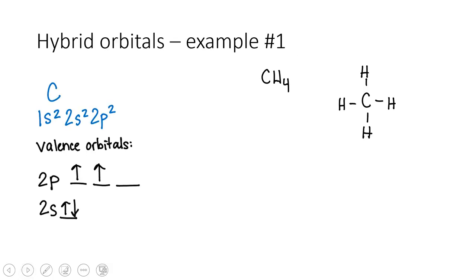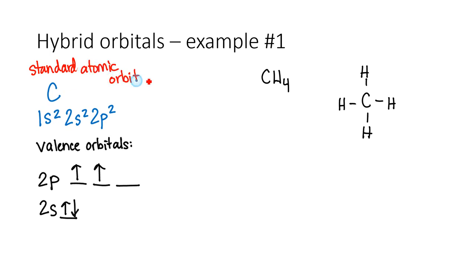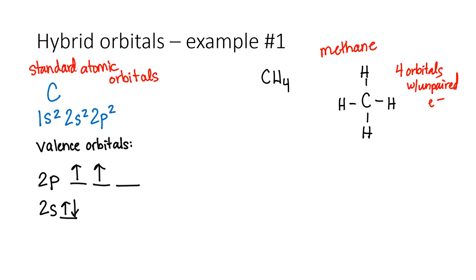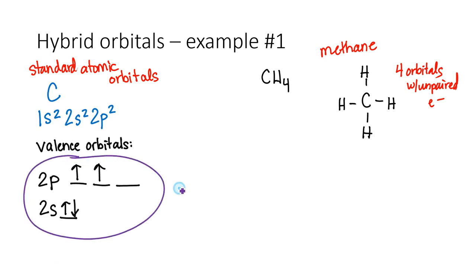Let's look at some examples. Here are the standard atomic orbitals. If we had a single atom of carbon on the left, we would expect it to form two bonds. Here in the methane molecule, carbon is forming four bonds. So what we observe is that carbon must have four orbitals with unpaired electrons in them. The way we get this is we're going to take all four of these orbitals, mix them together, and come up with four new orbitals.